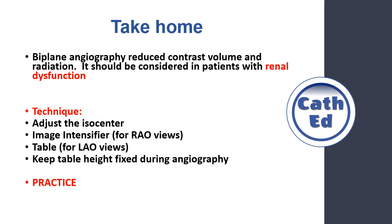Finally, some take-home points. Biplane angiography is a really important tool — it can reduce contrast and radiation, and it should be highly considered in patients with renal dysfunction. The most important technical step is adjusting the isocenter and putting the heart in the isocenter of the two radiation beams. We do that by moving the image intensifiers for the RAO views and moving the table up and down for the LAO views. During coronary angiography, we have to keep the table height fixed. Most importantly, practice this technique as much as you can so you can perform it perfectly in patients who truly need it.